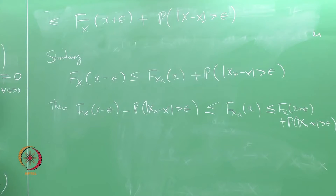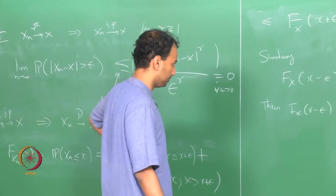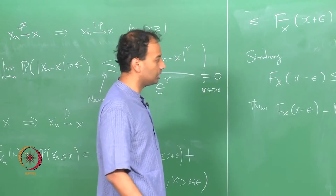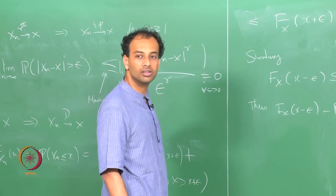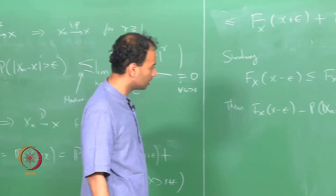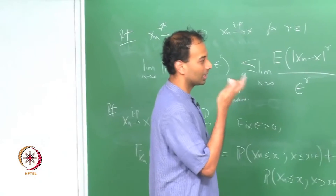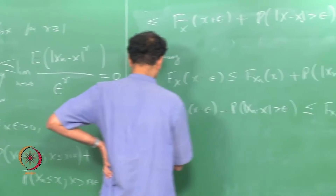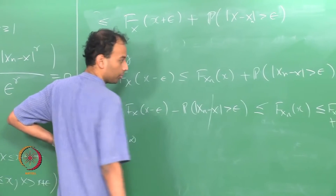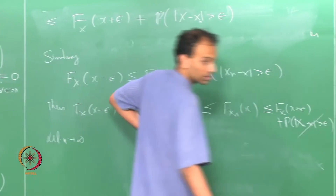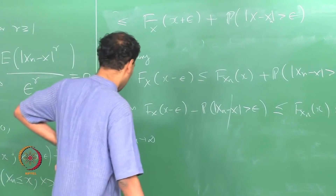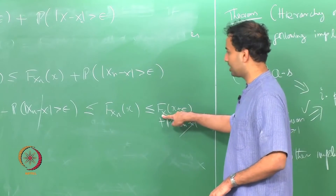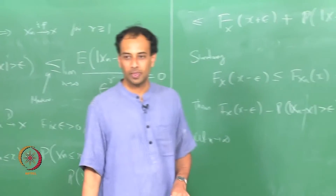Now as we send n to infinity in this double inequality — we assumed convergence in probability holds — the probability term drops out in the limit for every epsilon. So the limit will be sandwiched between F_X(X plus epsilon) and F_X(X minus epsilon).